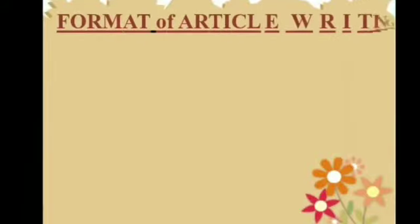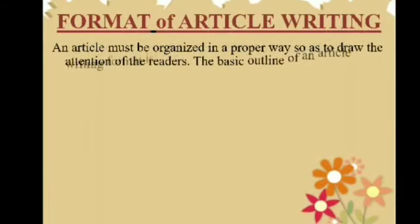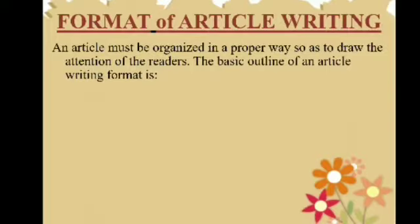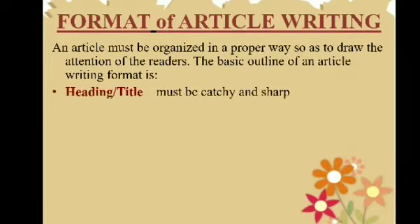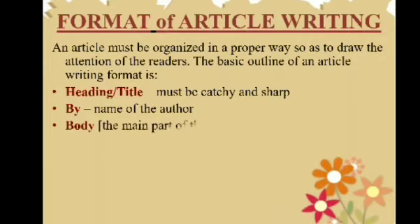Let's discuss the format of article writing. An article must be organized in a proper way so as to draw the attention of the readers. The basic outline of an article writing format is: heading or title — it must be catchy and sharp. Under the heading, by, we write the name of the author. Next is the body, the main part of the article, which consists of two to three paragraphs.